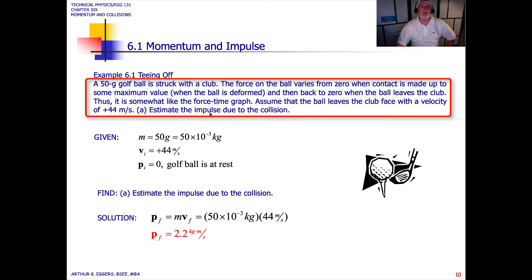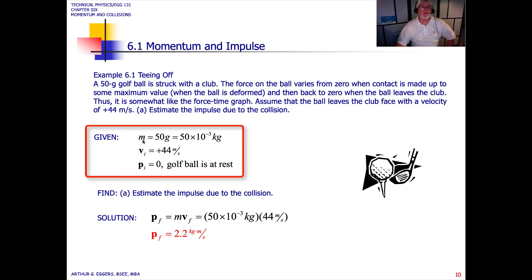Estimate the impulse due to the collision. So we gather our terms here, our givens. The mass is equal to 50 grams. The initial velocity, 44 meters per second. The initial momentum is zero because the golf ball is at rest. We're going to estimate the impulse due to that collision.